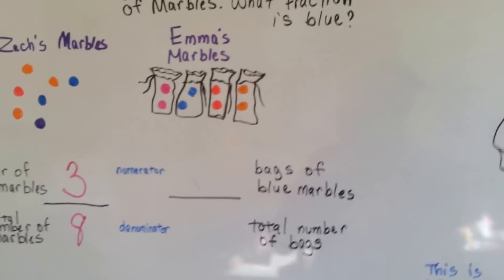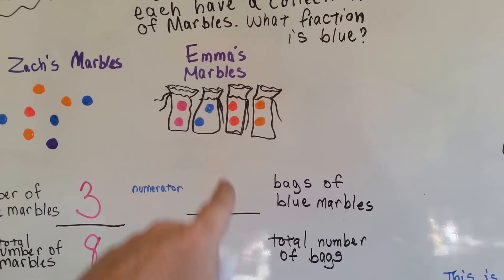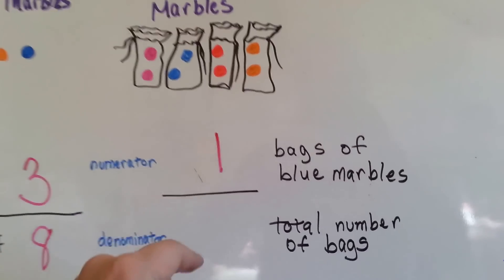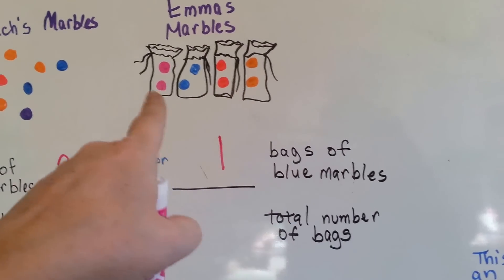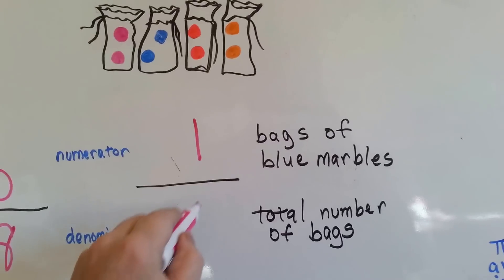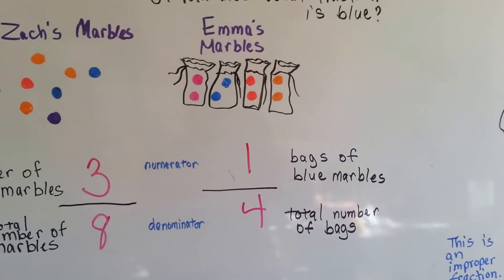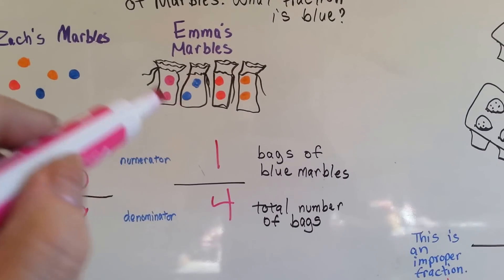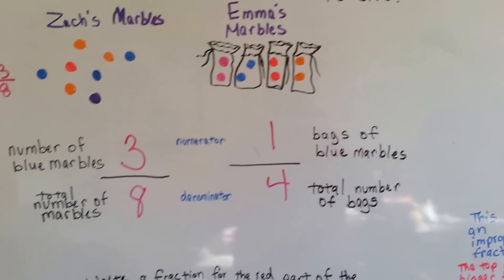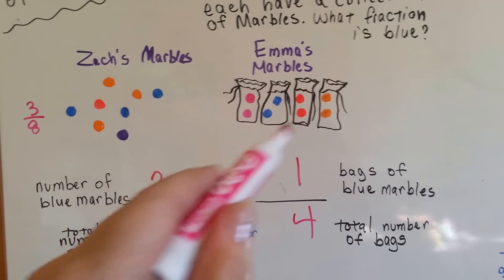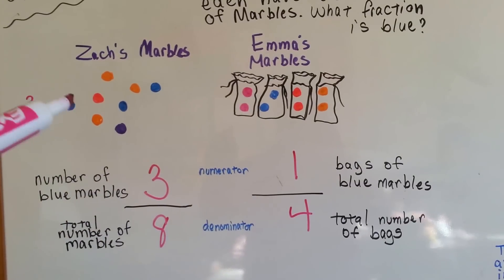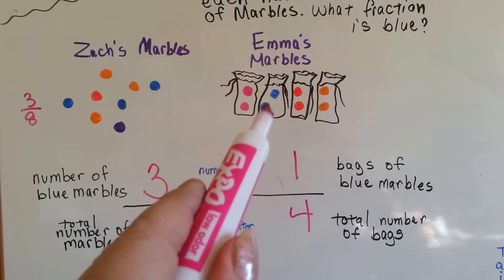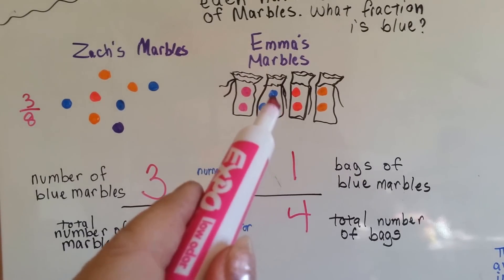Let's look at Emma's bags here. How many bags of blue marbles does she have? She's got one bag with two blue marbles in it, but it says bag, so she's got one bag. What's the total number of bags that she has? She has one, two, three, four bags. So one fourth of Emma's marbles are blue, because there's one bag that's blue, and there's a total of four bags. Do you see how we did that? It could either be how much of a group, or how many in that particular group. I know it's very, very confusing. These are grouped together. We didn't count the blue marbles in the bag, we counted the bags. See, that was the group.